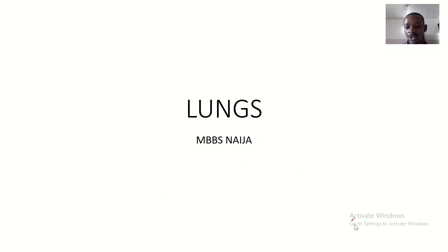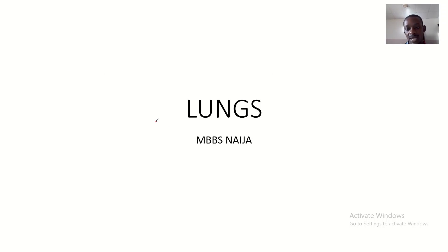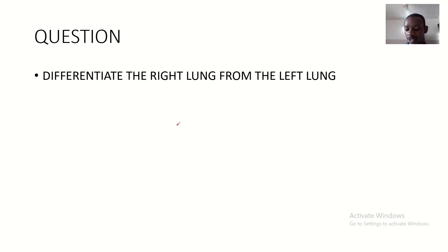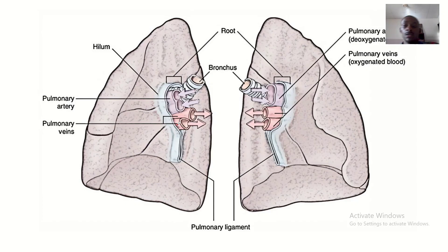Today we'll be talking about the lungs. This lecture is about the differences between the right lung and the left lung. You know that the human lungs on the left and the right are not identically the same. On our screen here is a diagram showing the lungs, and you can see that the right lung is different from the left lung.